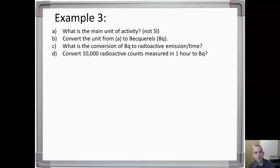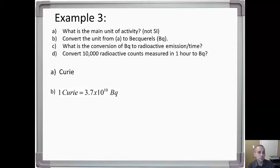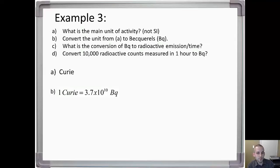Example three: what is the main unit of activity? There are two — the SI unit is becquerel, and the other is curie. The conversion: one curie is equal to 3.7 times 10 to the 10 becquerel — a very important conversion to remember. Also very important: one becquerel equals one disintegration per second.